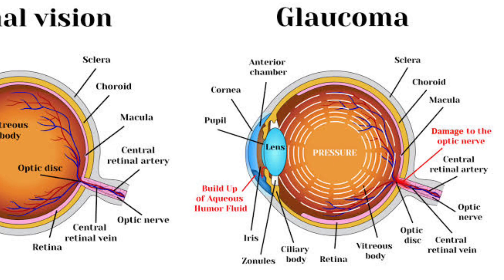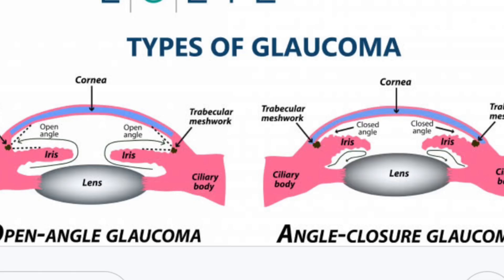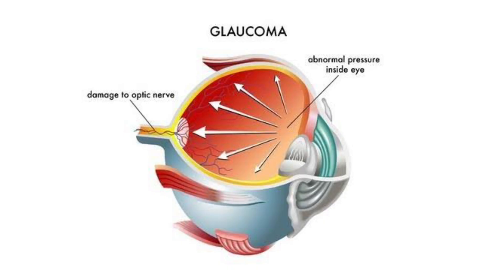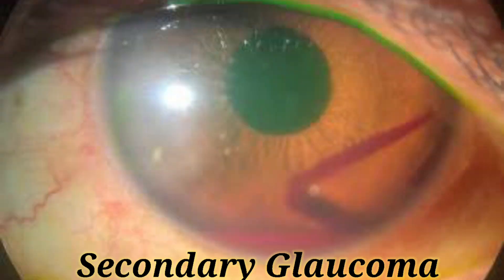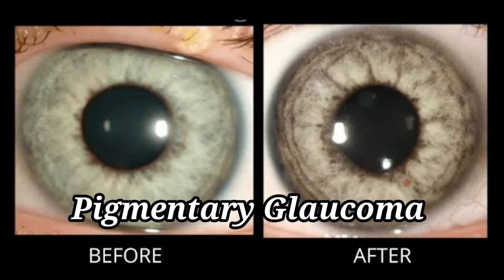When it comes to types of Glaucoma, there are many: open angle Glaucoma, primary open angle Glaucoma, angle closure Glaucoma, normal tension Glaucoma, and secondary Glaucoma — which occurs because of some other disease, injury, or condition of the eye, not directly from Glaucoma itself. There is also pigmented Glaucoma, among many other types.